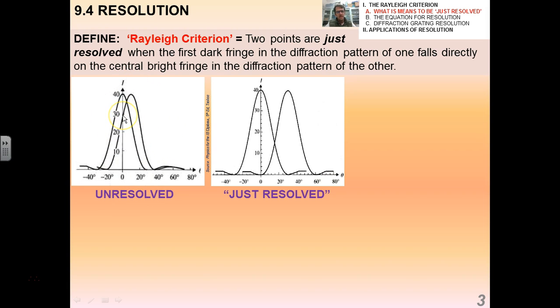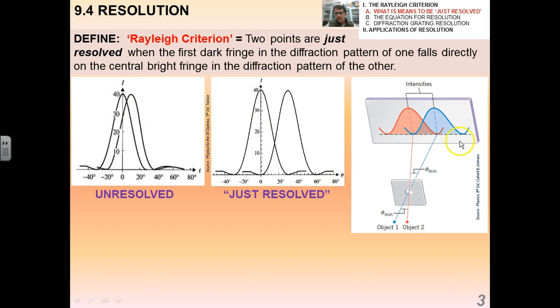And in 3D this is what it looks like: object 1, object 2, the minimum theta. So you can tell that if we want to increase the resolving power of a camera or an eyeball or whatever, we want theta to be very small. We don't want a very big theta, we want it to be super tiny so we can discern or resolve very small objects. That's what we're looking for.